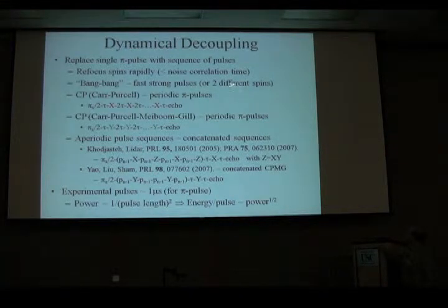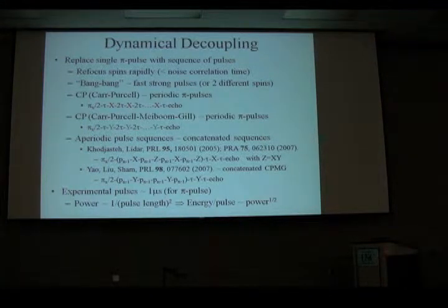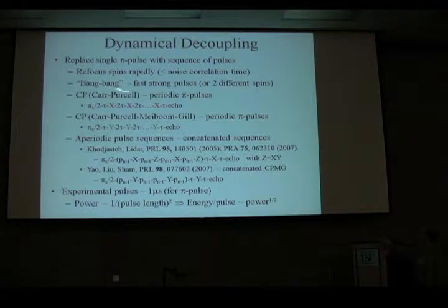However, there's some tricks you can play. And in particular, what we're going to do is work with two different spins, an electron spin and a nuclear spin. And because of the coupling between them, we can put very fast pulses on the nuclear spin without so much power.